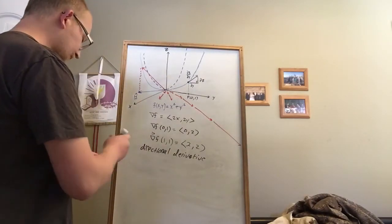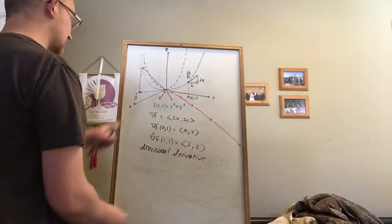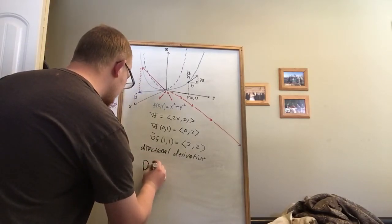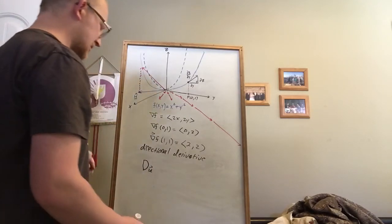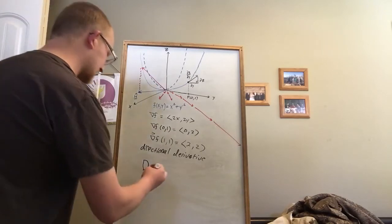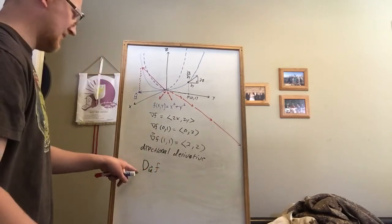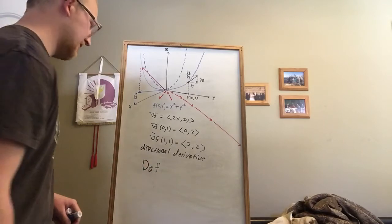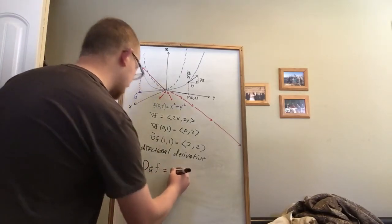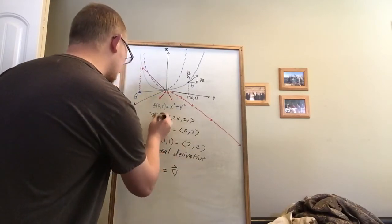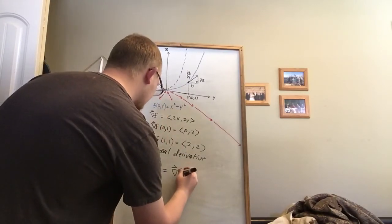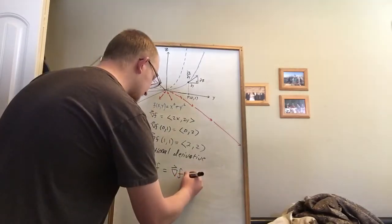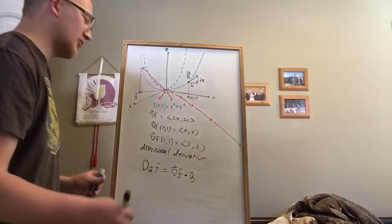And so to do that, what we do is we use the dot product. And so to find, I believe they call it D_u f. There's a special notation for this. And what it stands for is the derivative of f in the direction of u. And what it is equal to is equal to the gradient of f, which gives us this intrinsic information of route to fastest ascent. And then we dot it with the unit vector in the direction of which we're interested.